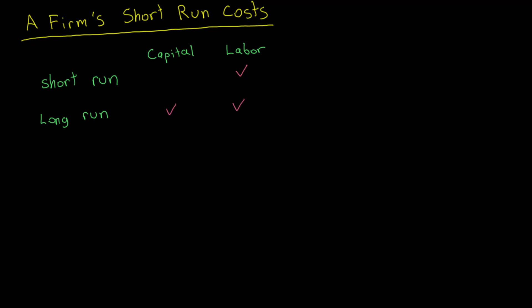We can represent a firm's short-run costs by using a cost function — I'm going to call that cost function capital C. It is an increasing function in the quantity of output produced by the firm, lowercase q. This cost is the sum of two components. The first component is the firm's variable cost, which is also increasing in q.